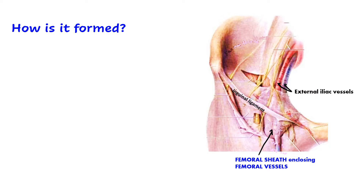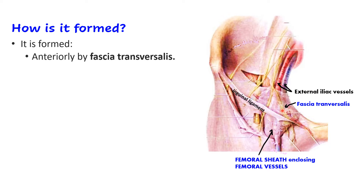As these vessels pass behind the inguinal ligament, they are enclosed in a fascial sheath. The anterior aspect of this sheath is formed by fascia transversalis — the deep fascia of the anterior abdominal wall, lying deep to the three muscles: external oblique, internal oblique, and transversus abdominis. This fascia transversalis forms the anterior part of the sheath as the vessels reach the thigh.